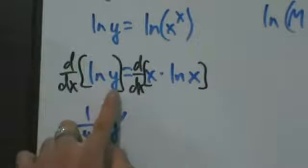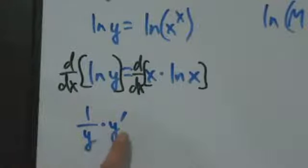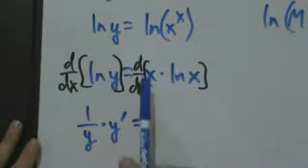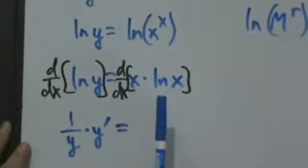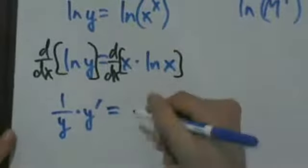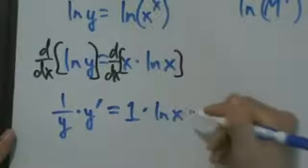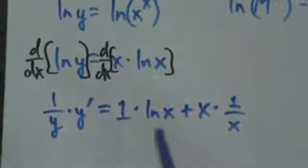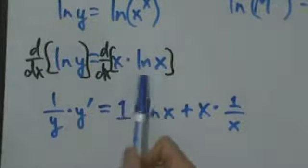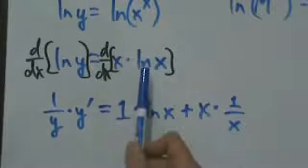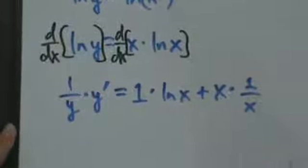So the derivative of natural log of y gives us (1/y) times y prime — I'll write y prime for short. On the right side, we have the derivative of a product, so we use the product rule. Our first is x, our second is natural log of x. The product rule gives: derivative of the first times the second, plus the first times the derivative of the second. The derivative of x is 1, times natural log of x, plus x times the derivative of natural log of x, which is 1/x. Simplifying: one times natural log of x is just natural log of x, and x times 1/x simplifies to 1. So we have natural log of x plus 1 on the right.